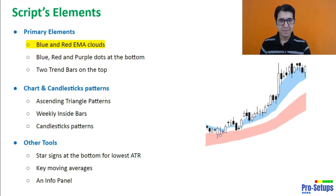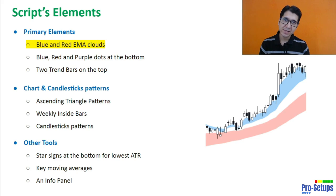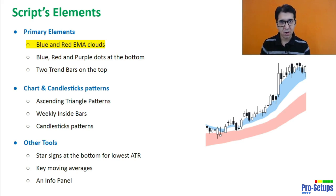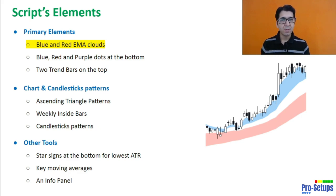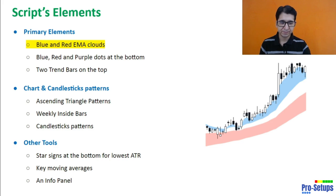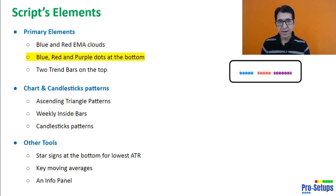The first element is the blue and red EMA clouds. The blue EMA clouds are basically the combination of multiple moving averages of shorter time duration. The red EMA cloud is basically the combination of multiple moving averages of longer time duration. Then we see blue, red and purple dots.